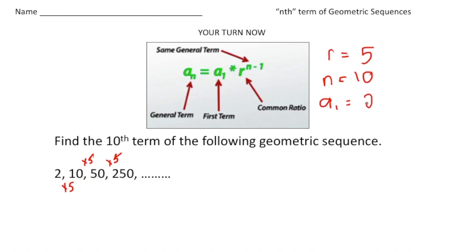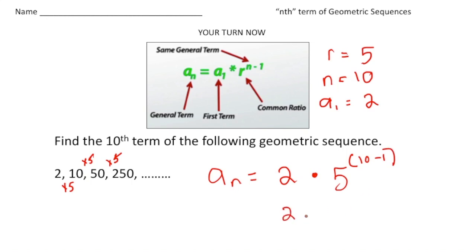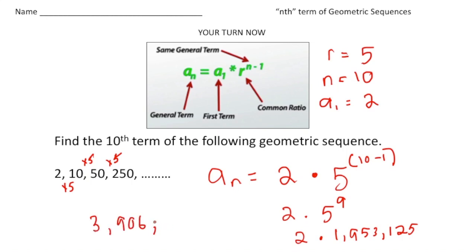Now we have what we need to plug into the formula. aₙ equals a₁, which is 2, times our common ratio, which is 5, to the power of n minus 1. Since n is 10, that's 10 minus 1, so this is really 2 times 5 to the 9th power. 5 to the 9th power is 1,953,125 — it's totally fine to use a calculator for these. Times 2 gives us our answer of 3,906,250. That would be the 10th term if we keep multiplying each term times 5.